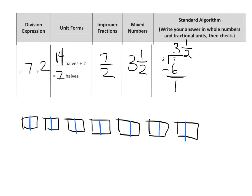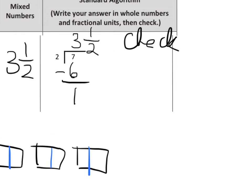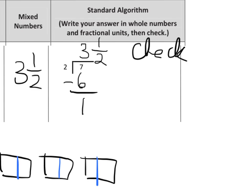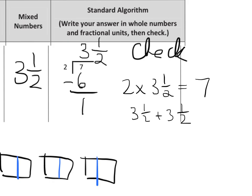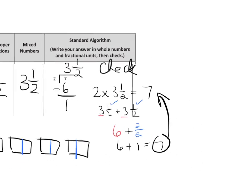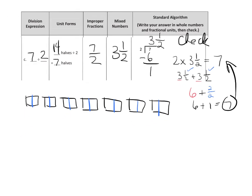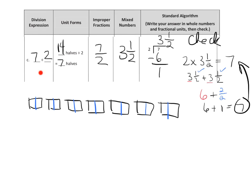Now I need to check it. So 2 times 3 and a half had better equal 7, because when you divide, the way you check it is by multiplying. So 2 times 3 and a half means 3 and a half plus 3 and a half. That's 3 plus 3 which is 6, plus 1 half plus 1 half which equals 2 halves, which is 1 whole. So 6 plus 1 equals 7 — exactly what we wanted. Again, you might want to pause and make sure you understand how everything is connected.